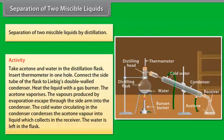The cold water circulating in the condenser condenses the acetone vapor into liquid, which collects in the receiver. The water is left in the flask.